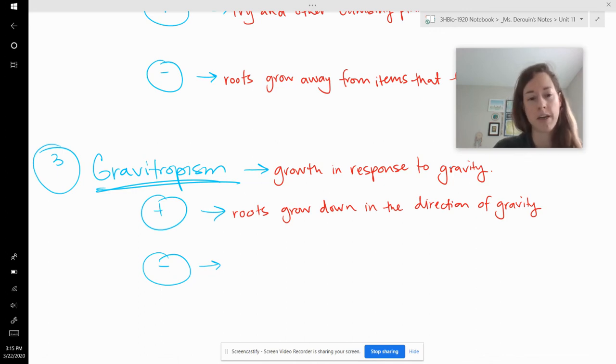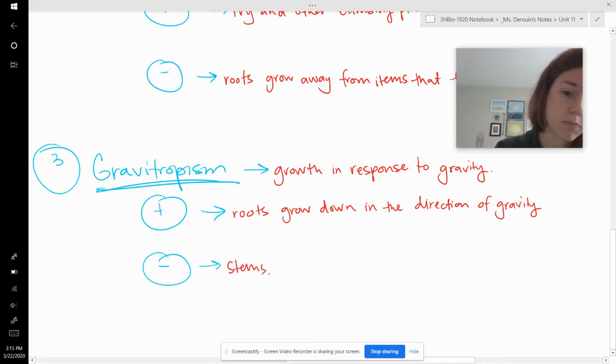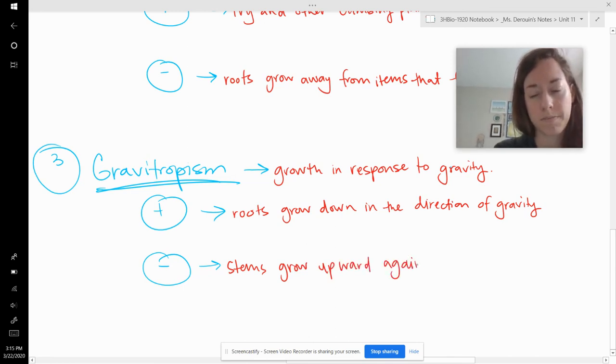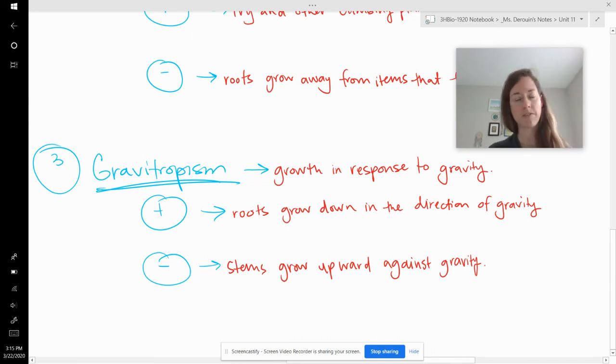And then the opposite of that would be like a stem. So stems grow upward against gravity. And you can see that too, if you turn a plant on its side and there's some really cool examples of like trees that got turned on their sides and then they start growing back upwards as negative gravitropism. They're growing away from gravity. And it really does it. It really happens. It's very cool. Okay. So those are three types of tropism.